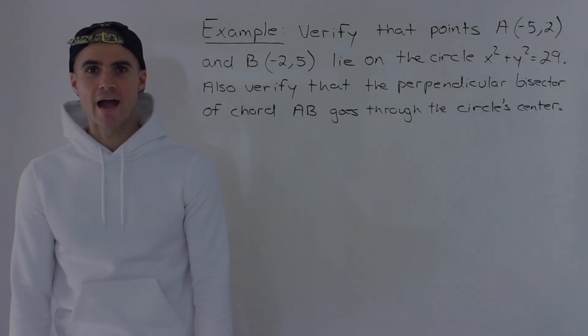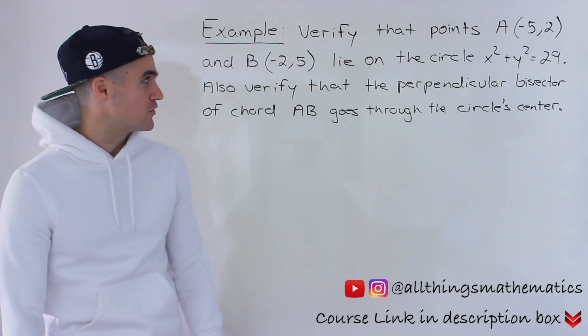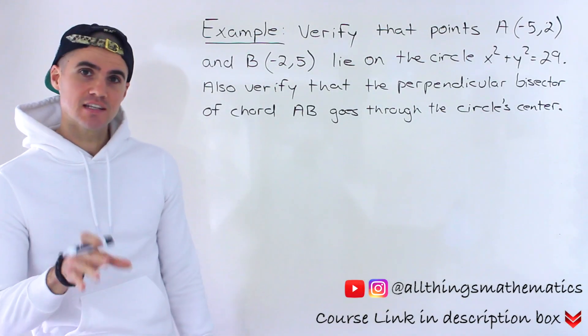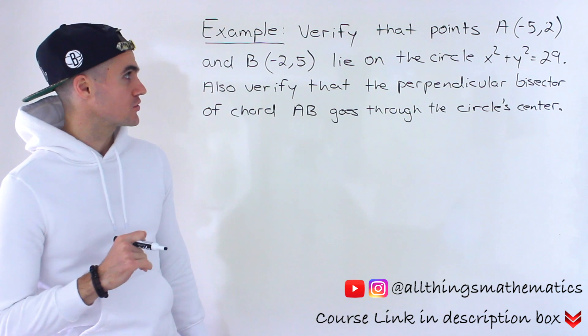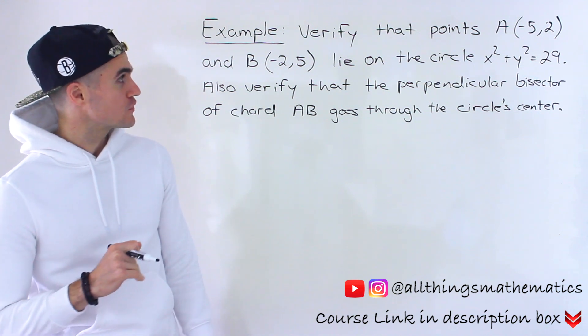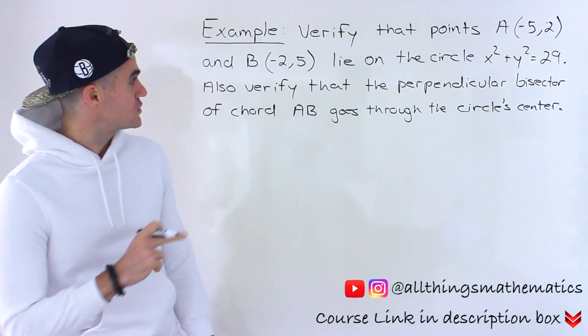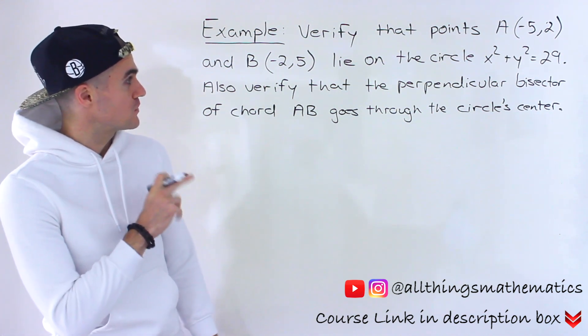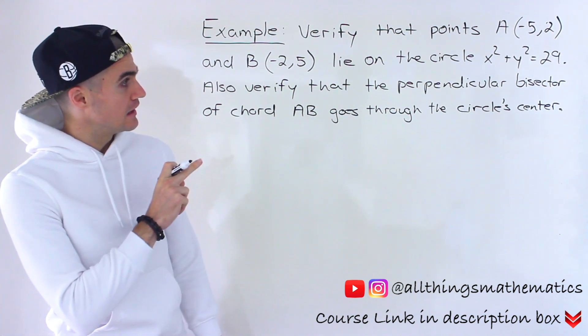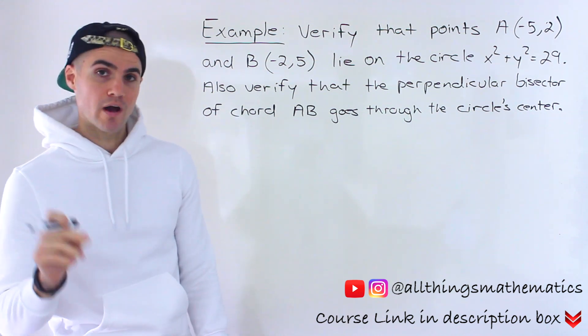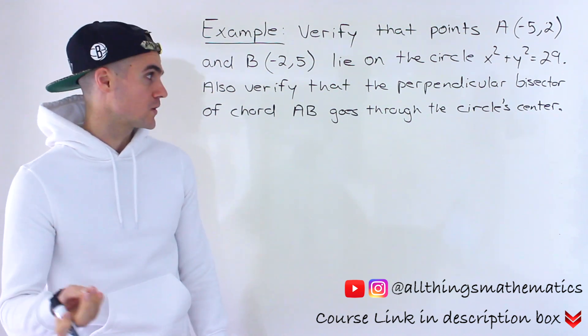What's up everyone, welcome back. Patrick here. Moving on to the next question dealing with circles. We have to first verify that the points negative 5 and 2, and negative 2 and 5, lie on the circle x squared plus y squared is equal to 29.